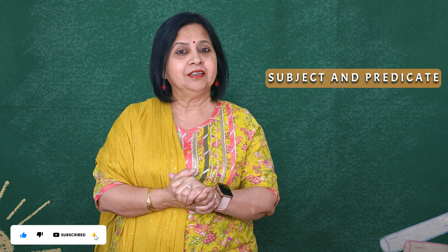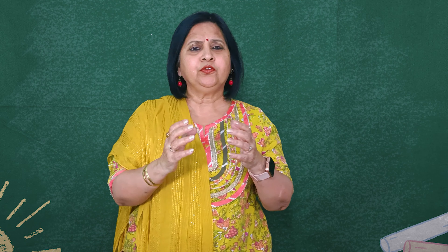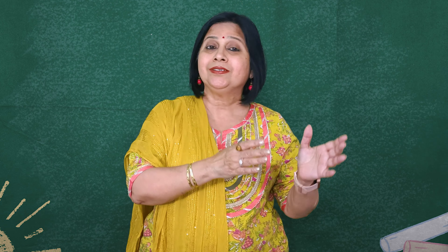Let us look at a few examples now to see which is the subject part and which is the predicate part. The yellow highlighted part is the subject and the rest is the predicate. As you can see, 'Farang' — just one single word, that's a noun. Then 'the men and women' — more than two words, but we are talking about them in the sentence. It's very easy to find out which is the subject and which is the predicate: ask whom are we talking about, or what is the sentence talking about?